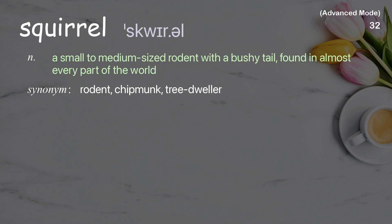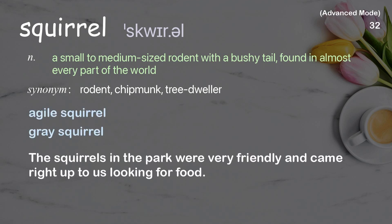Squirrel: a small to medium-sized rodent with a bushy tail found in almost every part of the world. Examples: agile squirrel; gray squirrel; the squirrels in the park were very friendly and came right up to us looking for food.